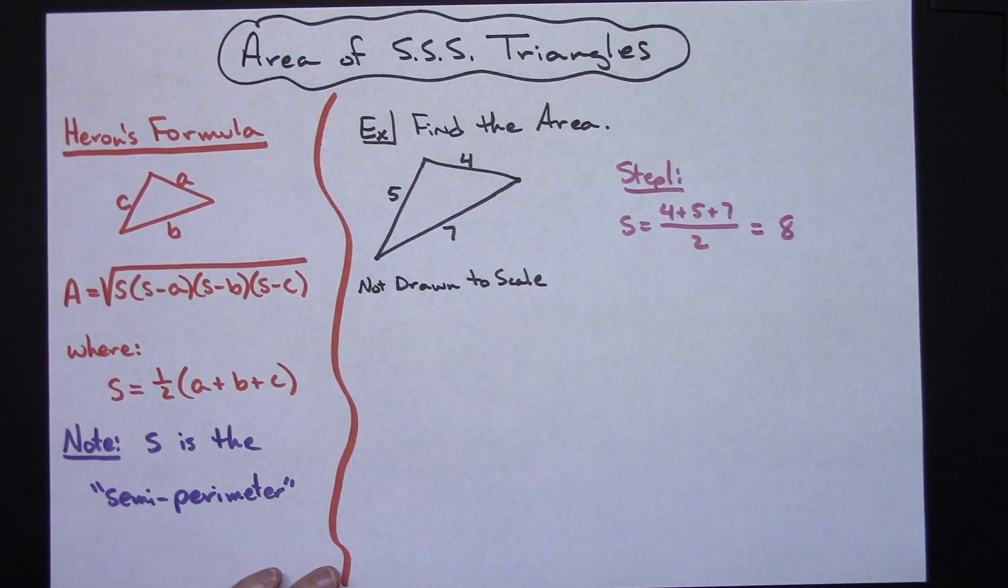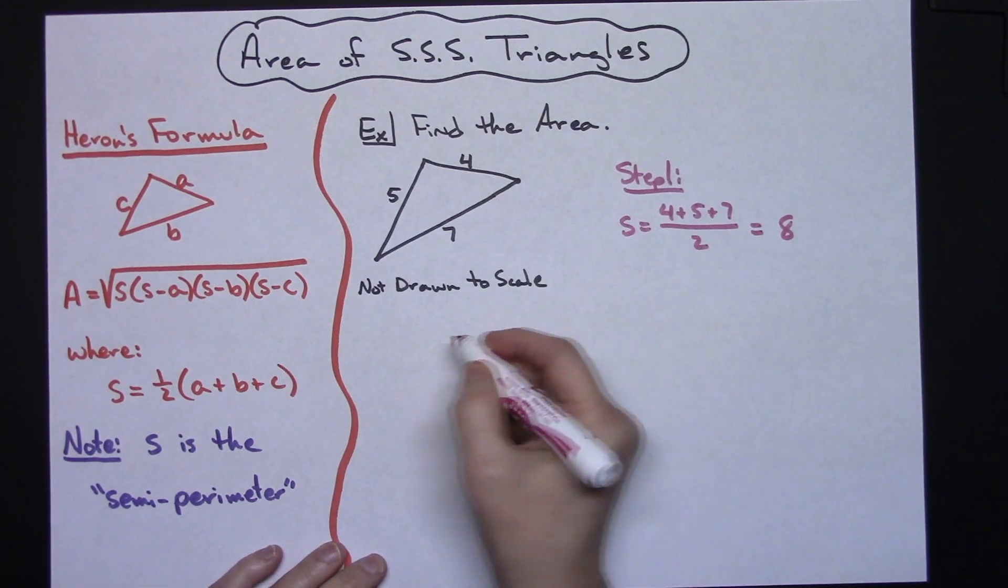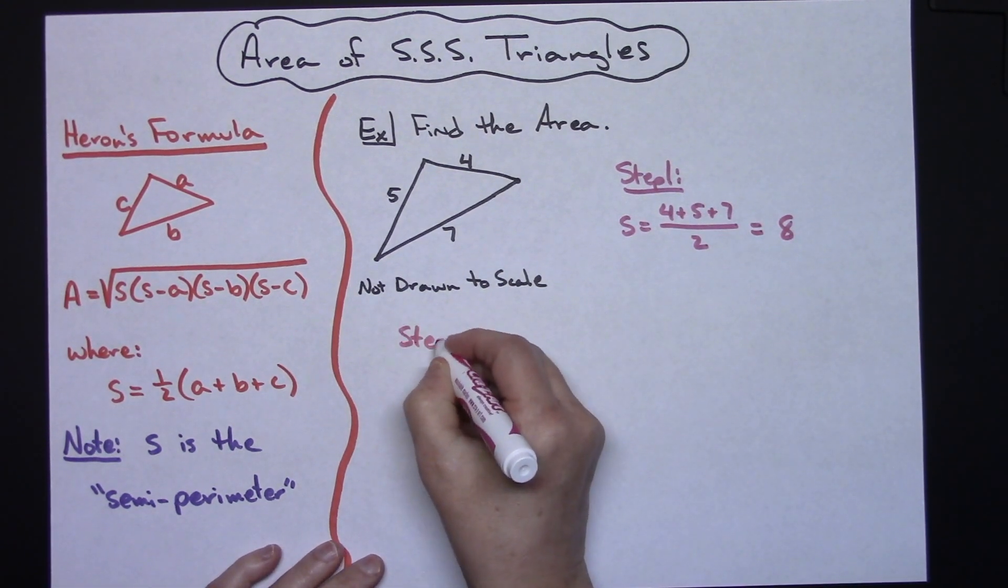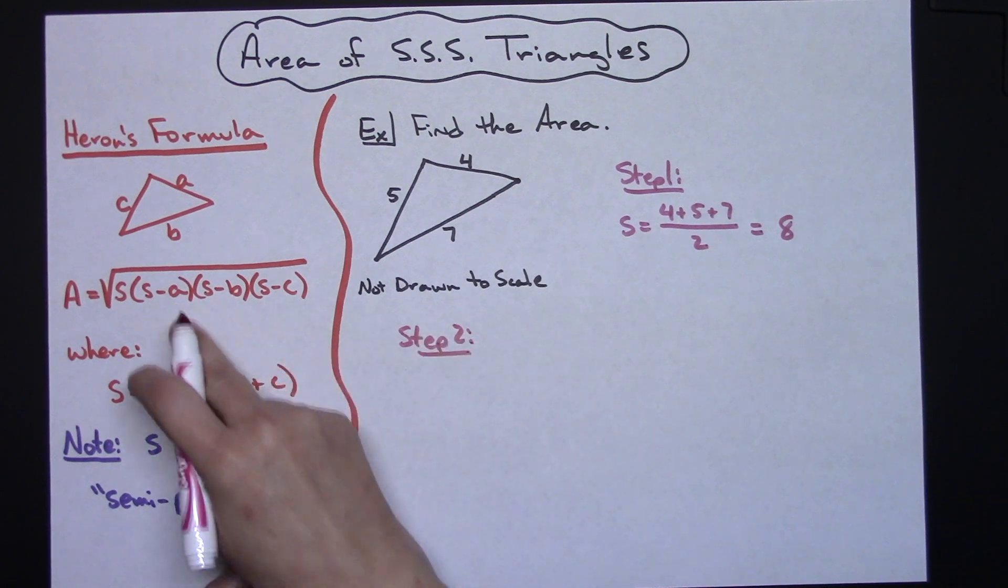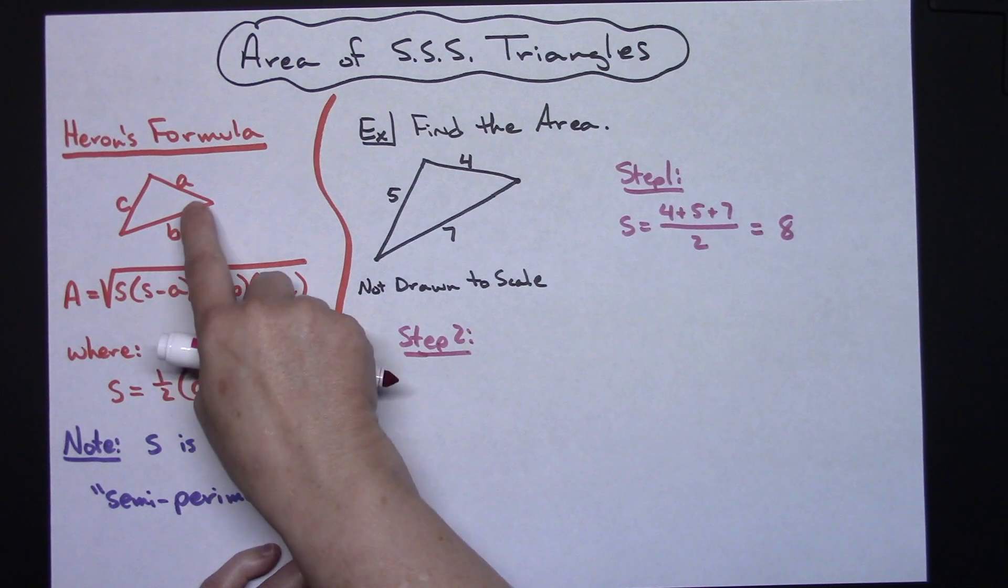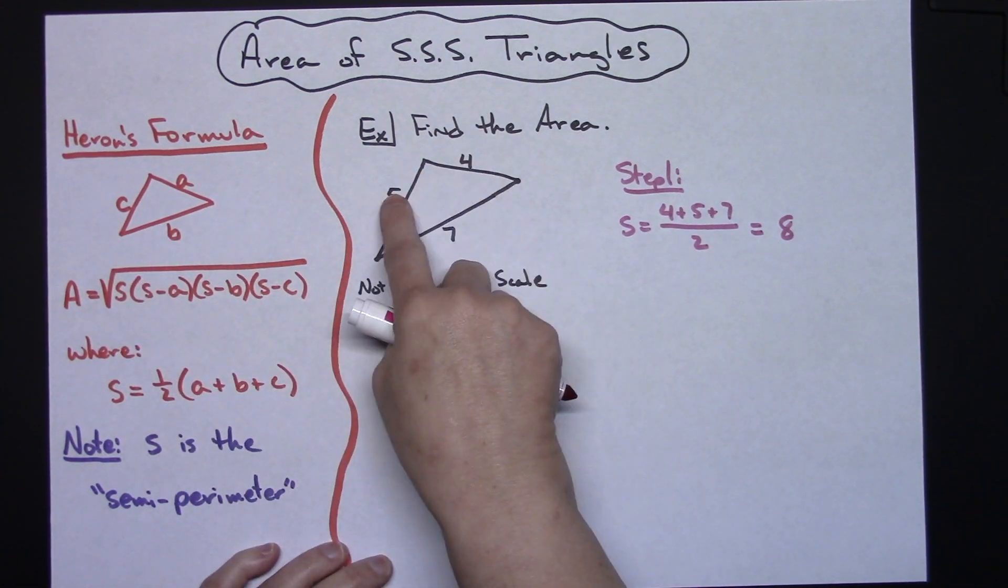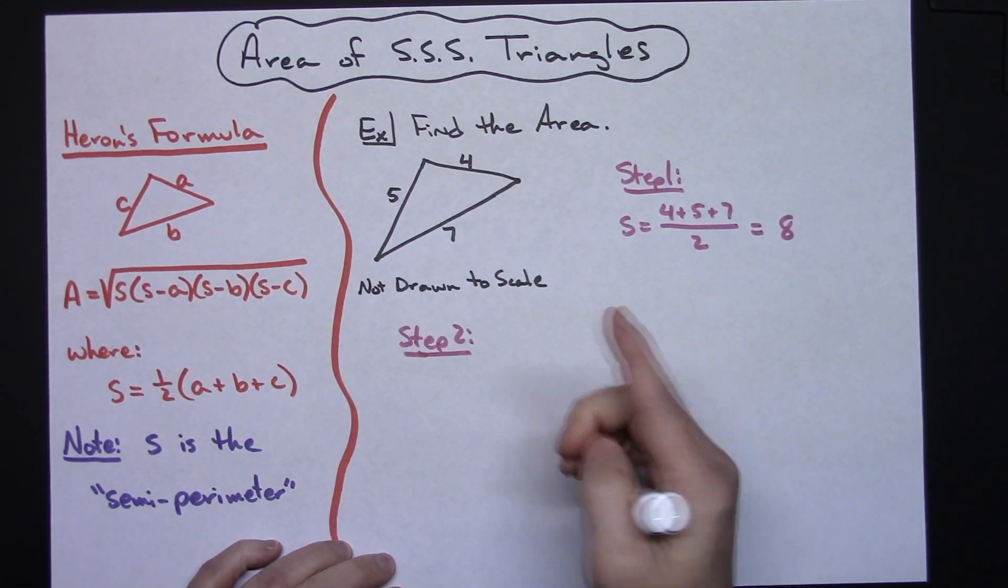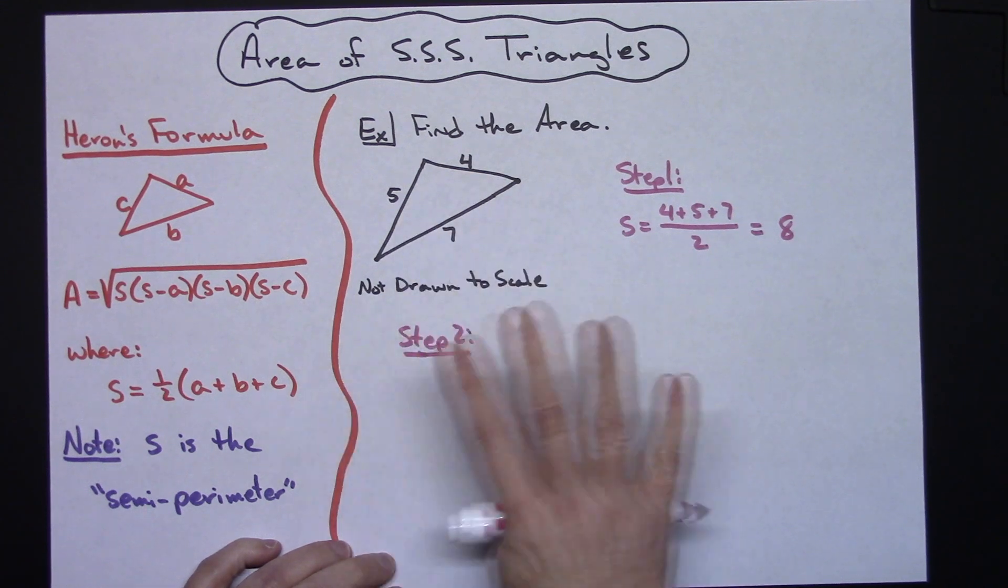If you need to grab a calculator, whatever, you can. You should be able to do that type of arithmetic in your head. Now step two then would be to actually use the formula with the square root in it. So my s value is 8 and my three sides are 4, 5, and 7.